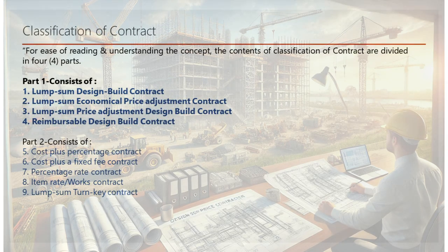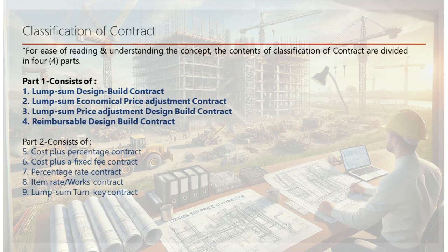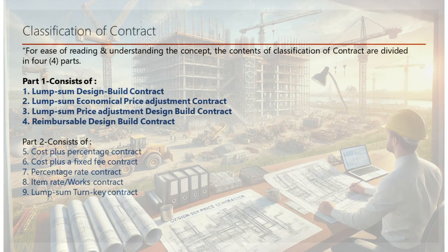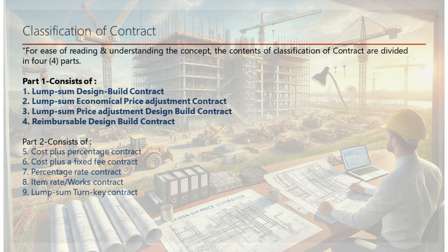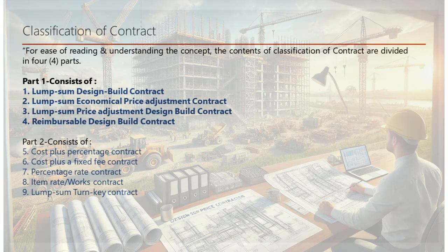Part two will cover: 5. Cost-plus percentage contract. 6. Cost-plus a fixed fee contract. 7. Percentage rate contract. 8. Item rate works contract. 9. Lump-sum turnkey contract. In this part, we'll dive into contracts that provide more flexibility in pricing and cost management. These types are particularly useful in projects with variable scopes or when the project owner wants to ensure cost control.